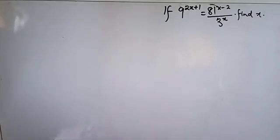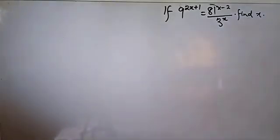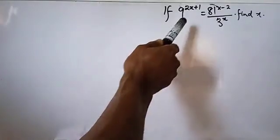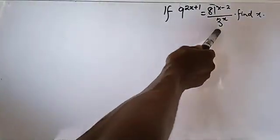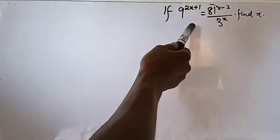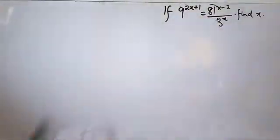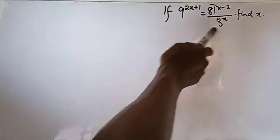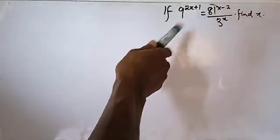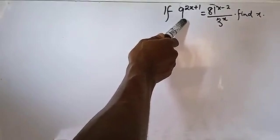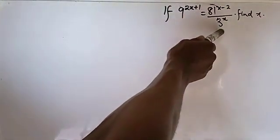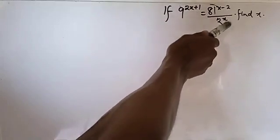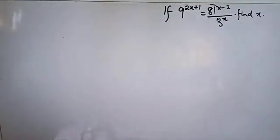Now we figure out the common factor in this expression. We can see we have 9, we have 81, and we have 3. The common factor between all of them is 3. Since all of them share a common factor of 3, what we need to do is change 9 to a base of 3 and change 81 to a base of 3. Since 3 is already in base 3, we can leave that as is.